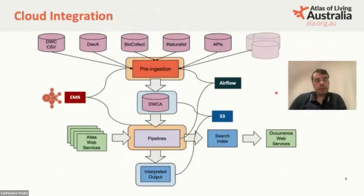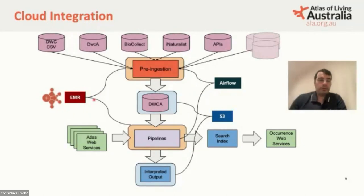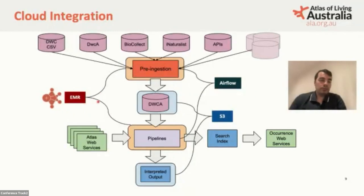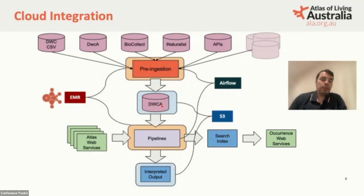Regarding cloud integration, we use Airflow to schedule, monitor, and manage the jobs and data loads. We use an EMR cluster — the Elastic MapReduce cluster of AWS — specifying the cluster size based on configuration and the load to be processed. After doing the pre-ingestion, we copy the Darwin Core archive to S3 and kick off another EMR cluster to run the pipeline. That EMR cluster gets the data from S3 and pushes it through the interpretations.